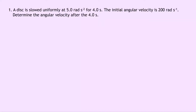So let's get started. Question 1 says that a disk is slowed uniformly at 5.0 radians per second squared for 4.0 seconds. The initial angular velocity is 200 radians per second. Determine the angular velocity after the 4.0 seconds.